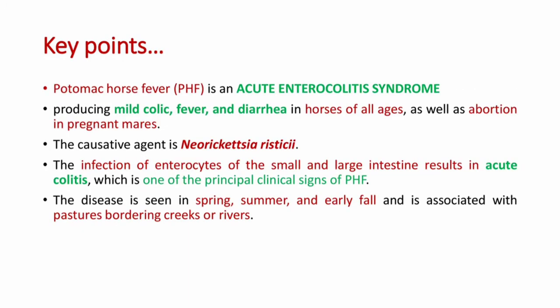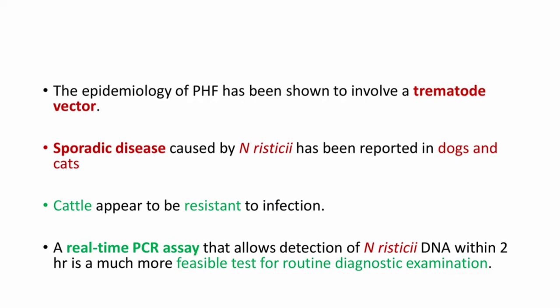Key points: Potomac horse fever is an acute enterocolitis syndrome producing mild colic, fever, and diarrhea in horses of all ages, as well as abortion in pregnant mares. The causative agent is Neorickettsia risticii; infection of enterocytes results in acute colitis. The disease is seen in spring, summer, and early fall, associated with pastures near rivers or creeks. A trematode vector is involved; sporadic disease has been reported in dogs and cats, while cattle appear resistant. Real-time PCR allows detection of Neorickettsia risticii within 2 hours and is the most feasible routine diagnostic test.